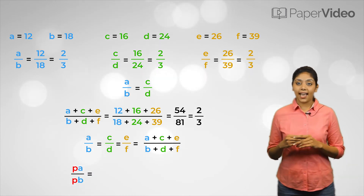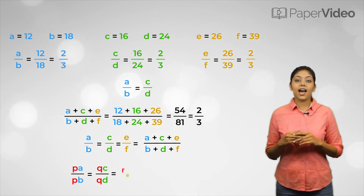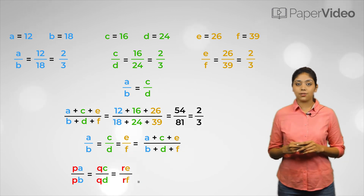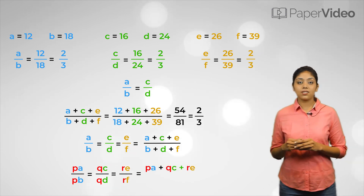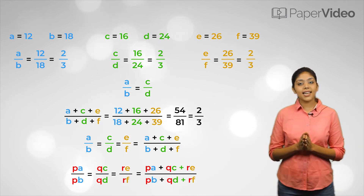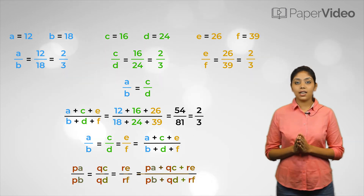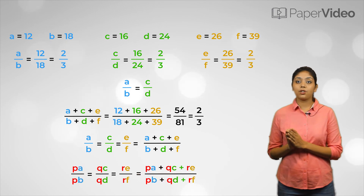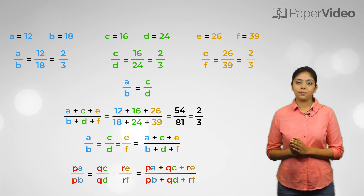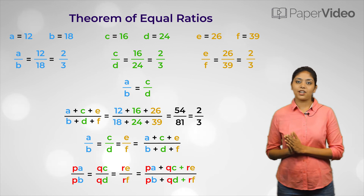We can write c upon d as qc upon qd, and e upon f as re upon rf. This means these ratios are equal to pa plus qc plus re upon pb plus qd plus rf. It tells us that if we have some equal ratios, then they would be equal to the ratio of the sum of the numerators and sum of the denominators of their non-simplified form. This is a very important concept in mathematics and is known as the Theorem of Equal Ratios.